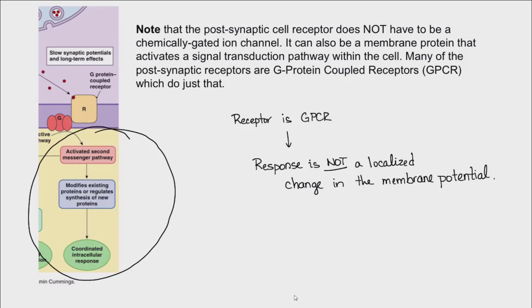That concludes this lecture, where we've explored a chemical synapse — its structure, the processes that occur at a chemical synapse, and the different responses in the postsynaptic cell depending on what type of receptor is present. In our next lecture, we're going to look at different neurotransmitters, what types of receptors they tend to be paired with, and what types of effects they tend to exert.